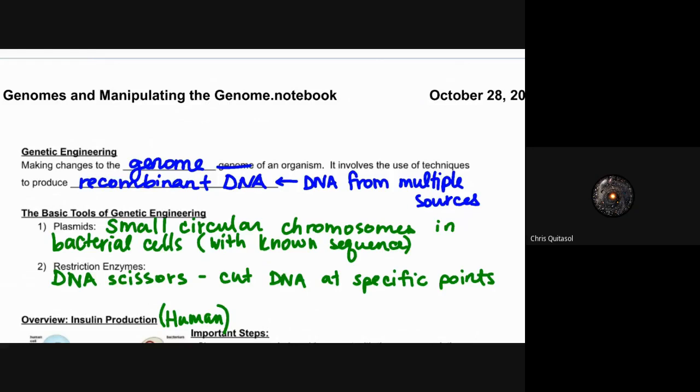So tomorrow we'll look at how insulin is produced in humans, as well as how we make insulin using recombinant DNAs tomorrow.